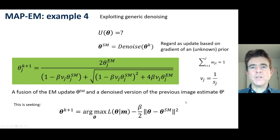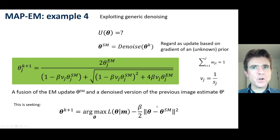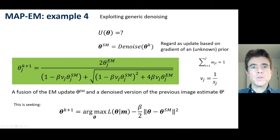This is effectively a proximal operator, where we're finding the theta that maximises the Poisson log likelihood but with a penalty term saying that theta must not go too far from the denoised current estimate of the image.